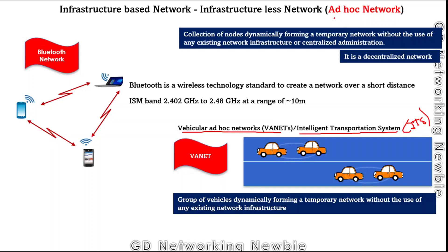There are many more examples of infrastructure-less ad hoc networks, but the key point is the difference: in an infrastructure-based network, there is a central entity, whereas in an infrastructure-less network there is no central entity — the nodes create the network on their own. That's it for today's discussion. I hope to see you in another video on trends in networks or mobile communication. Thank you.